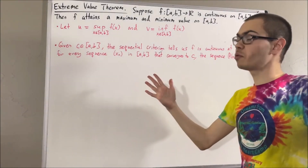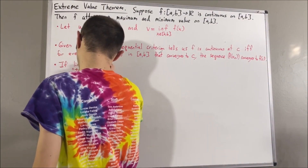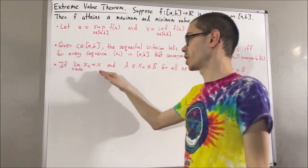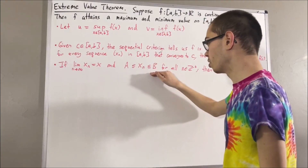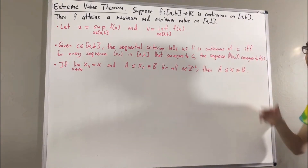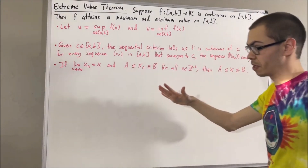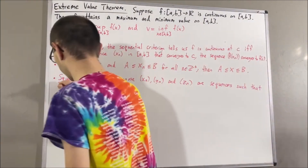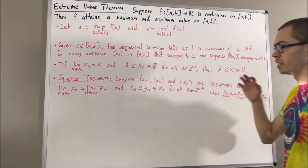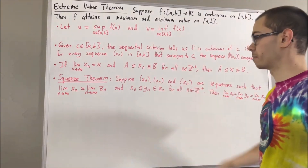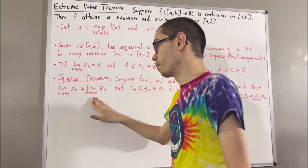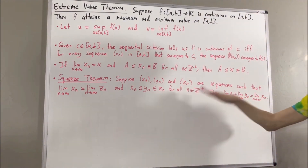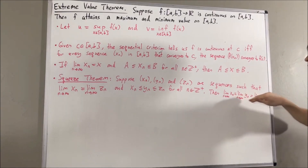A property about convergent sequences we'll use: if x₁, x₂, x₃, … is a convergent sequence of real numbers and every term is between a and b, then the limit of the sequence is also between a and b. We're also going to use the squeeze theorem for convergent sequences: given three sequences xₙ, yₙ, zₙ, if xₙ and zₙ converge to the same value and xₙ ≤ yₙ ≤ zₙ for all positive integers n, then yₙ also converges to that same value.